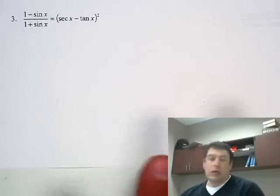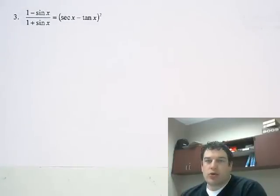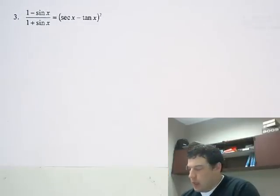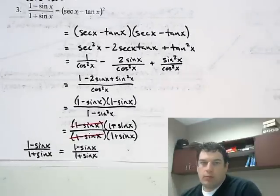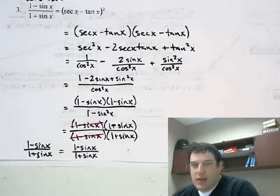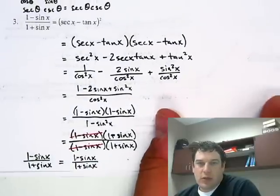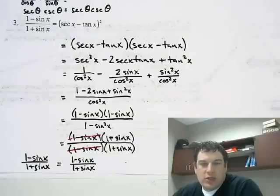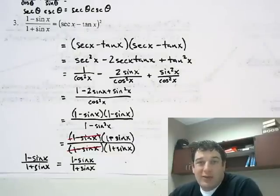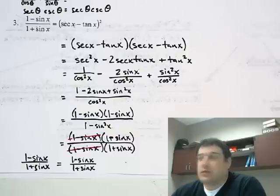The first one I want to take a look at is number three — you can see it right here. I want to show you what I did first, and it's not necessarily the best way to go about doing it. You can see it's kind of a mess, and the reason it's a mess is I didn't follow my own directions. One of my first steps that I always tell you is to change things into sines and cosines, and I didn't do that. I would suggest you put things in sines and cosines — that's going to make it a lot easier.